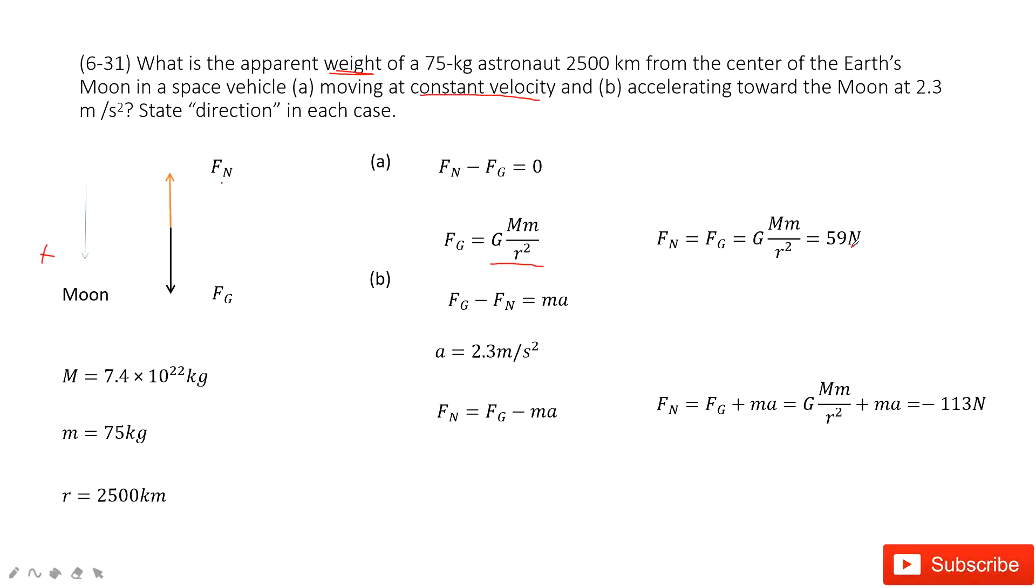The second one tells us there is acceleration towards the moon at 2.3 meters per second squared. So the acceleration is positive 2.3 meters per second squared. We need to find the normal force. How can we do that? Consider Newton's second law. The gravitational force minus the normal force must equal mass times acceleration.